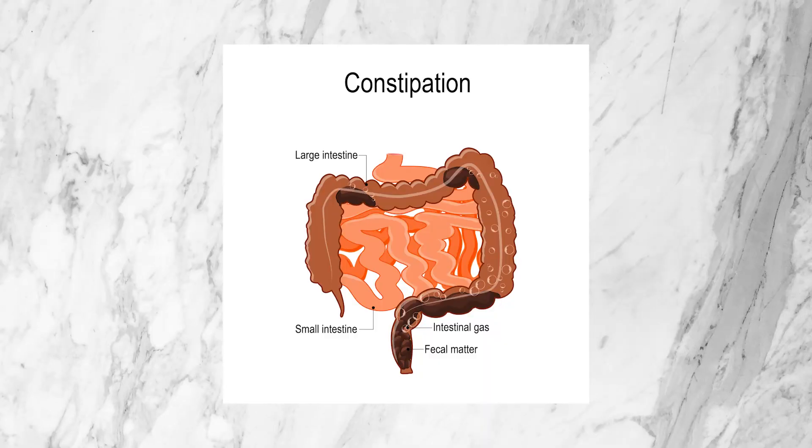As for the symptoms of intestinal methanogen overgrowth, a couple stand out above the rest. Number one: bloating and abdominal distension. These are incredibly common in both SIBO and IMO. Abdominal distension is similar to bloating, but specifically refers to when your stomach actually sticks out further — if you measured it with a measuring tape, you'd notice it's actually larger. When I had IMO, I had bloating and abdominal distension all the time, and my stomach was regularly a couple inches larger or more almost every day, especially at night after dinner.